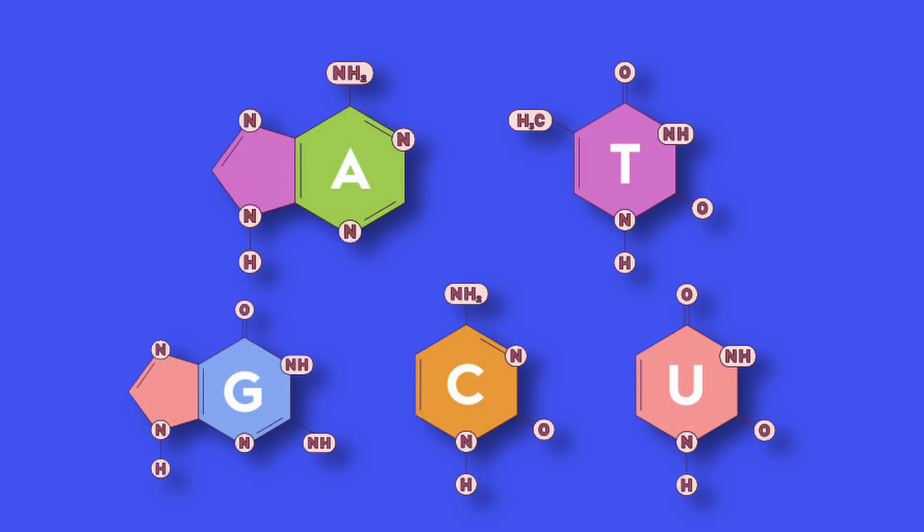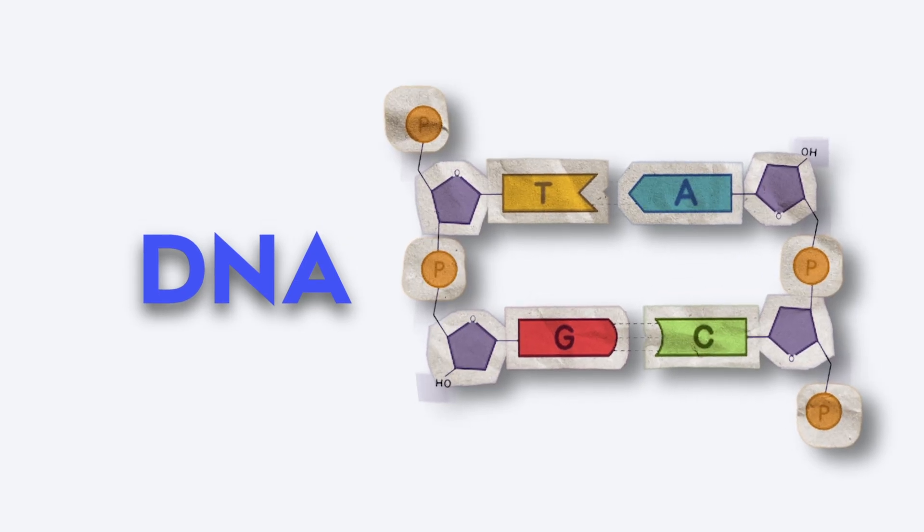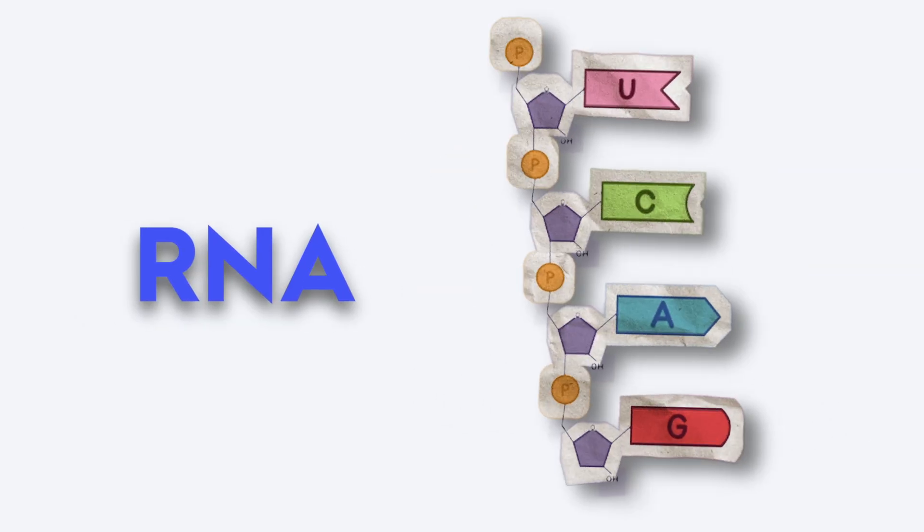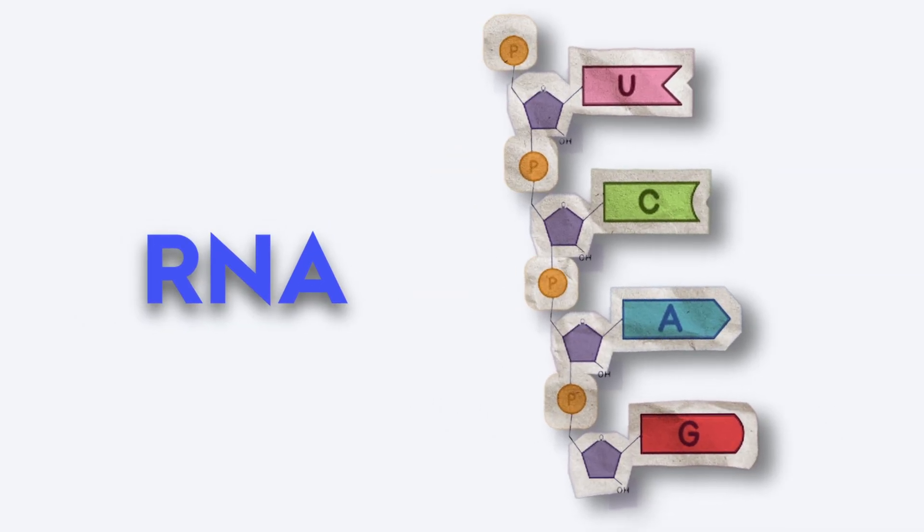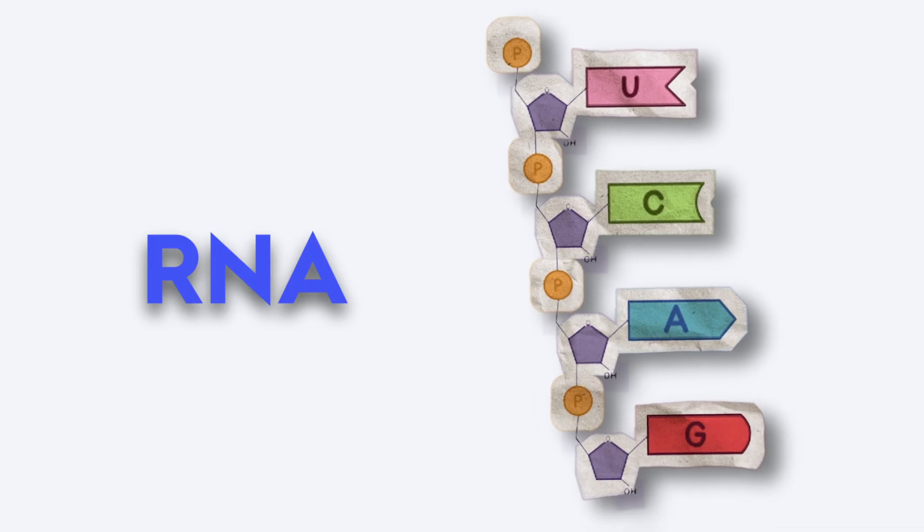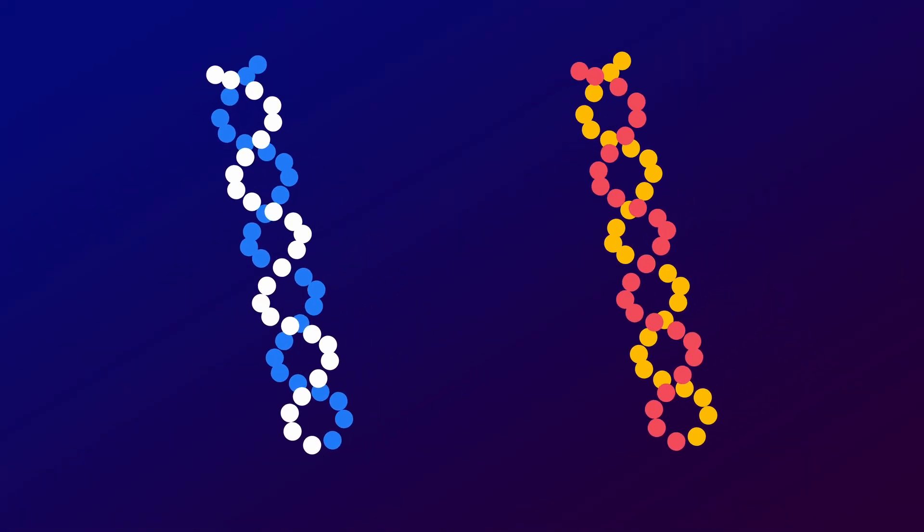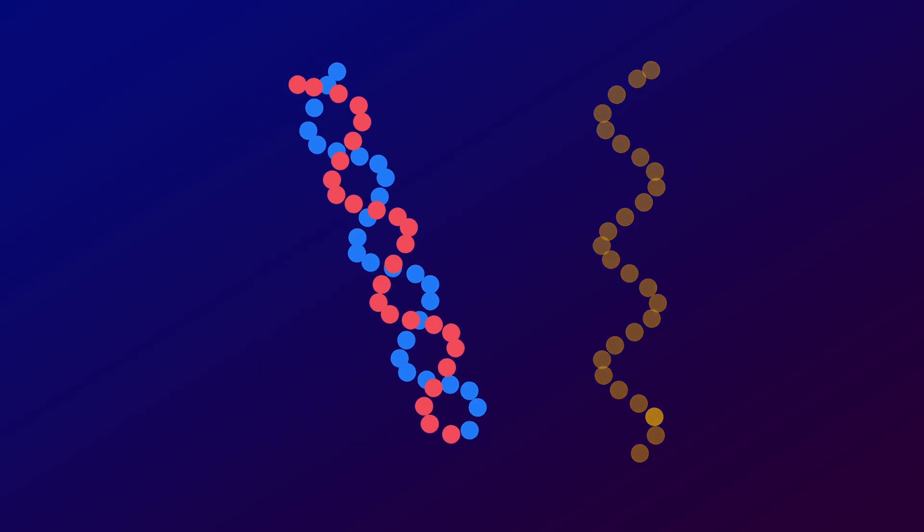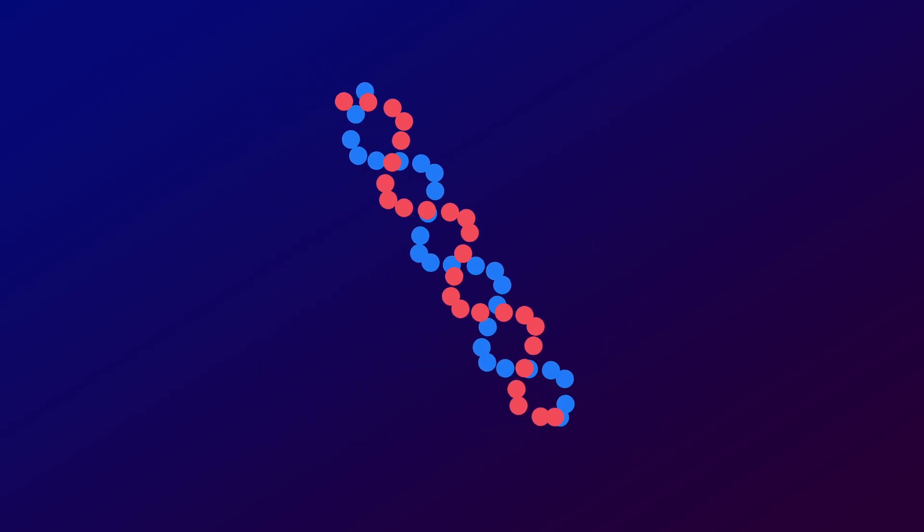Another difference lies in the bases they use. DNA pairs A with T and G with C. RNA, on the other hand, pairs A with U instead of T, while still pairing G with C. This switch makes RNA distinct from DNA during transcription and protein synthesis.